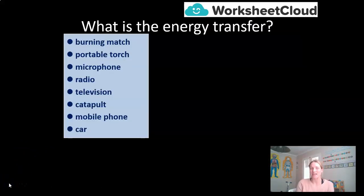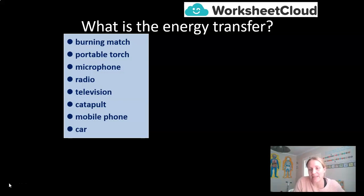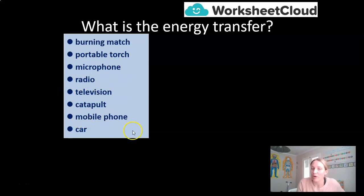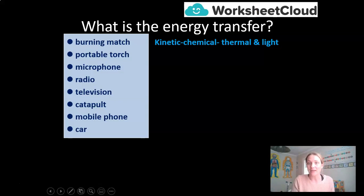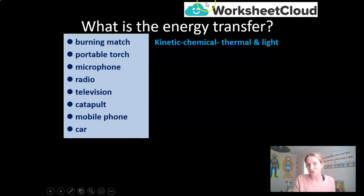So here is a challenge for yourselves. I have got a list on the screen of eight different everyday items, and I want you to think about the energy transfers that happen. The first one is burning a match. So what happens when I burn a match? Well, first of all, there's the kinetic energy of me striking the match — the movement of the match hitting the match paper. Then there's chemical energy because in the tip of the head of that match, energy is stored. That then is transferred into thermal and light energy when the match is struck.